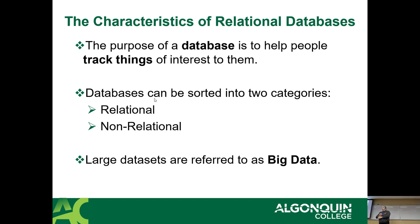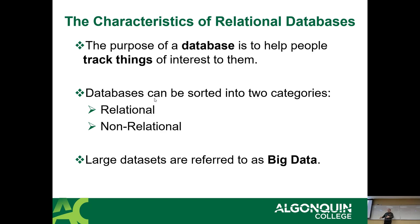Now we're going to talk about the characteristics of relational databases, because there are two kinds of databases: relational and non-relational. Whenever you hear the buzzword 'big data,' it just means that somebody has a lot of data — that's literally all that means. There's a difference between the guy running a little website with recipes on it and Amazon; it's just a difference of scale. At one point it stops being normal data and it becomes big data.